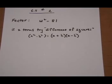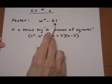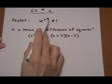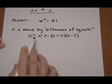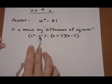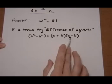Section 6.5 number 2. I'm going to do three different problems from the homework that all use the difference of squares formula. The thing you want to look for is if you have two perfect squares, and if they're being subtracted, then you can use the difference of squares formula: A squared minus B squared factors into A plus B, A minus B.